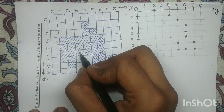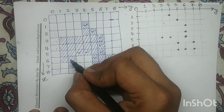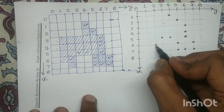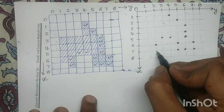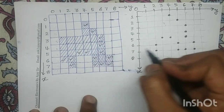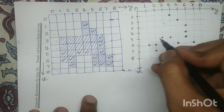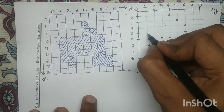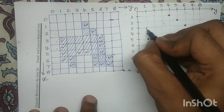Next boundary pixel has coordinate 5,3, so 5,3 is this pixel. Next boundary pixel has coordinate 6,2, so 6,2. Next boundary pixel has coordinate 7,2, so this is the point 7,2. Next boundary pixel has coordinate 6,1. Next boundary pixel is 5,1, let me mark 5,1. Next boundary pixel is 4,1, so let me mark 4,1. Our next boundary pixel is 3,1, so let me mark 3,1.